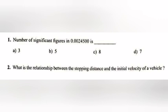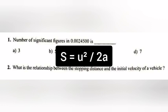Question 2: What is the relationship between stopping resistance and the initial velocity of a vehicle? Answer: S is equal to U square by 2A.